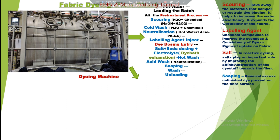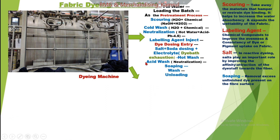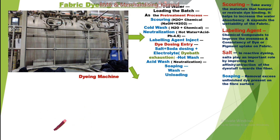Scouring also helps increase water absorbency and improve the wettability of the fabric. After scouring, a cold wash is done. Then neutralization is carried out using hot water and acid, and the pH level is checked to confirm whether the fabric is neutralized. After neutralization, a leveling agent is injected — leveling agent is a chemical compound that improves the evenness and consistency of the dye taken up by the fabric.